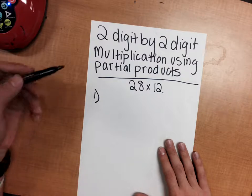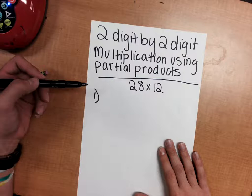Hello everyone, today I'm going to be talking about two-digit by two-digit multiplication using partial products. I already have a problem that we're going to work on today: 28 times 12.